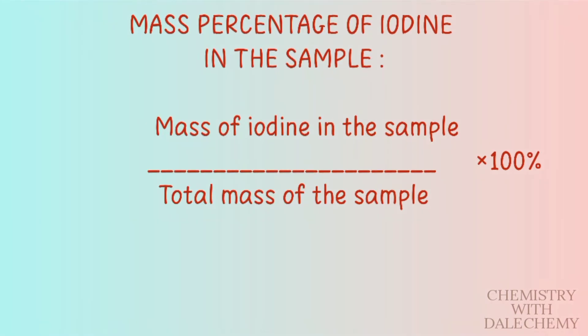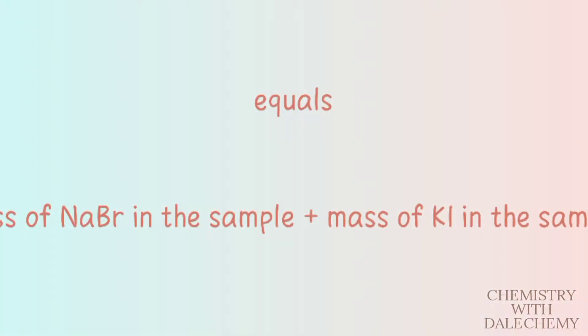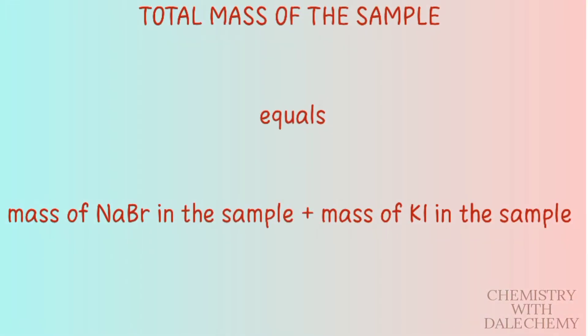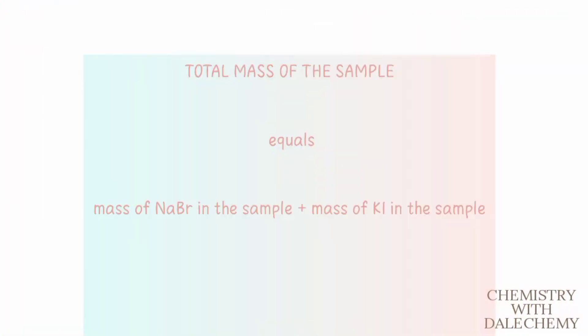The mass percentage of iodine in the sample is equal to the mass of iodine in the sample divided by the total mass of the sample multiplied by 100%. The total mass of the sample equals the mass of sodium bromide in the sample plus the mass of potassium iodide in the sample.